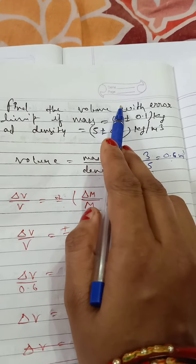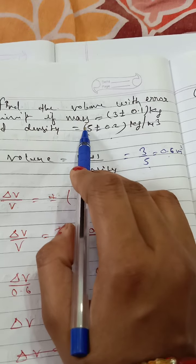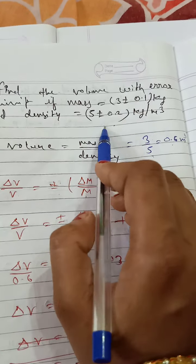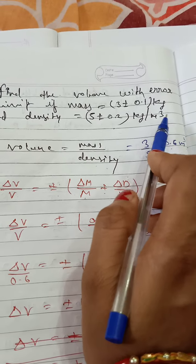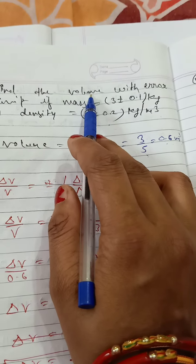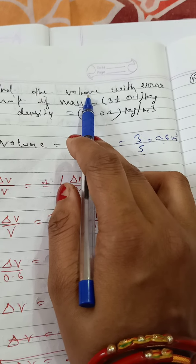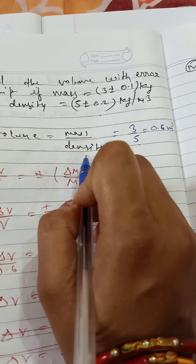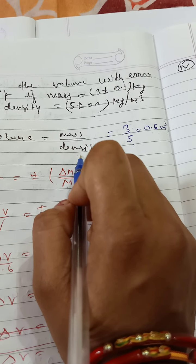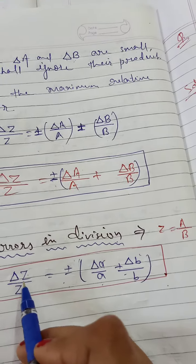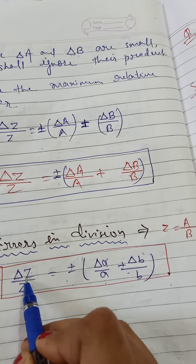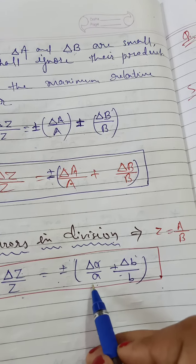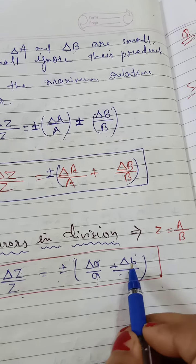Next example: find the volume with error limit, given mass equals 3 plus minus 0.1 kg and density equals 5 plus minus 0.2 kg per meter cube. We need to find volume, and volume equals mass divided by density, so we will use the formula for error in division form. Here delta-z is delta-v, z is v, delta-a is delta-m, and a is m.